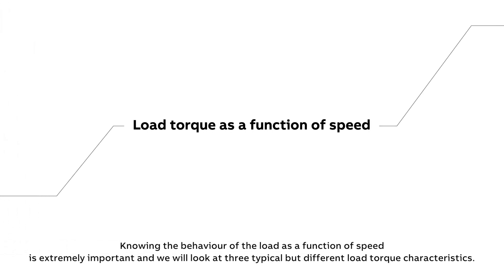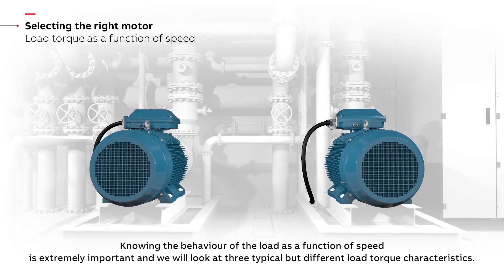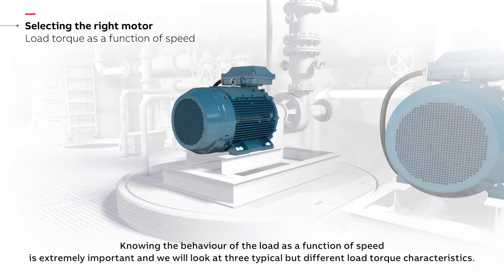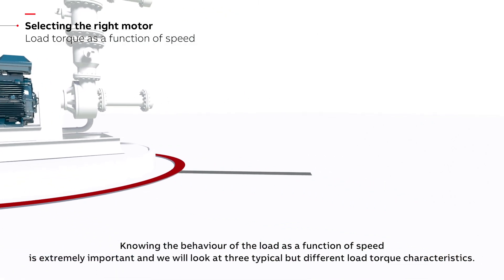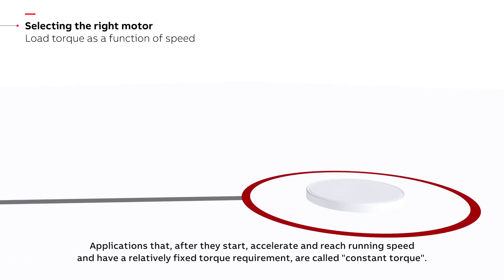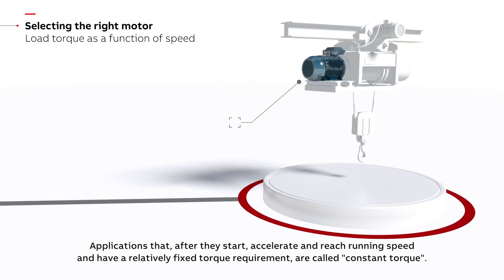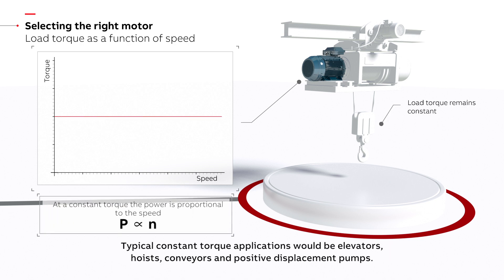Knowing the behaviour of the load as a function of speed is extremely important, and we will look at three typical but different load torque characteristics. Applications that after they start, accelerate and reach running speed and have a relatively fixed torque requirement are called constant torque. Typical constant torque applications would be elevators, hoists, conveyors and positive displacement pumps.